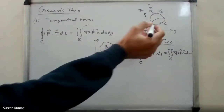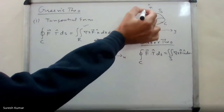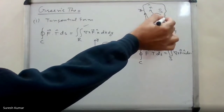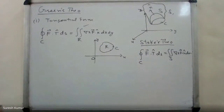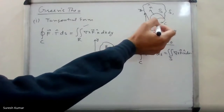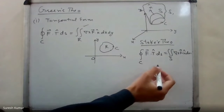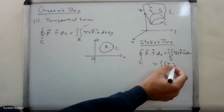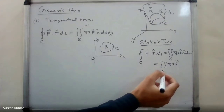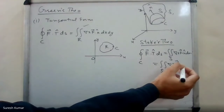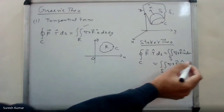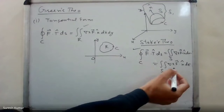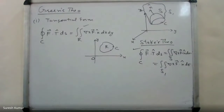Another important point: whatever the shape of the surface — say it is another surface S1, but the bounding curve C is the same — the result does not change. In place of S, you can write S1. This integral gives the same answer for both surface integrals. This could be helpful in some problems.